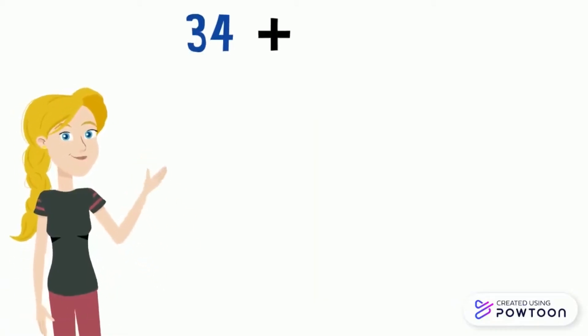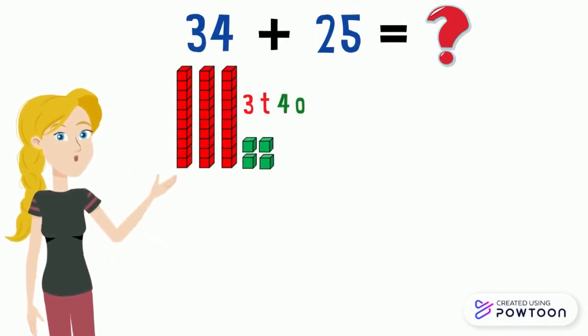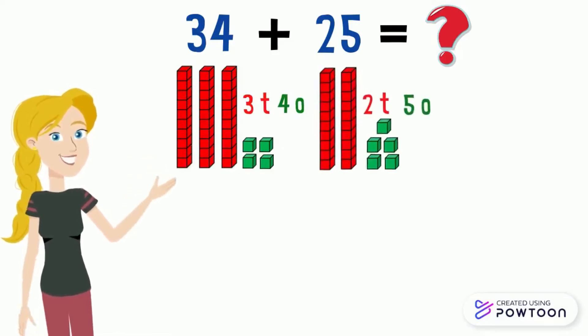Let's find out how to add 34 and 25. In the number 34, there are 3 tens and 4 ones, and in the number 25, there are 2 tens and 5 ones.